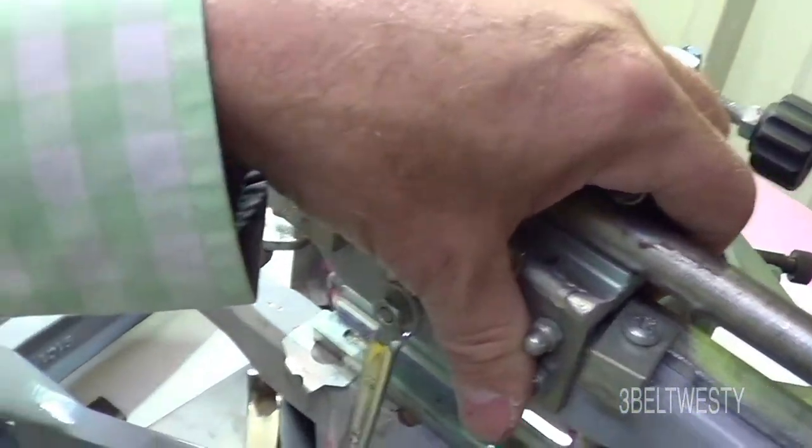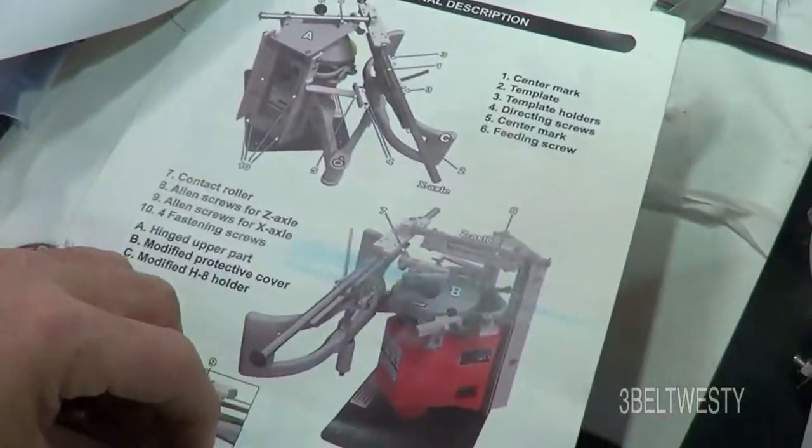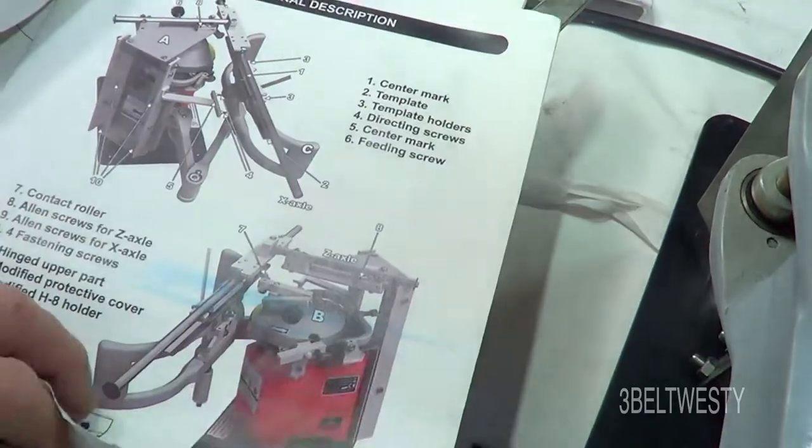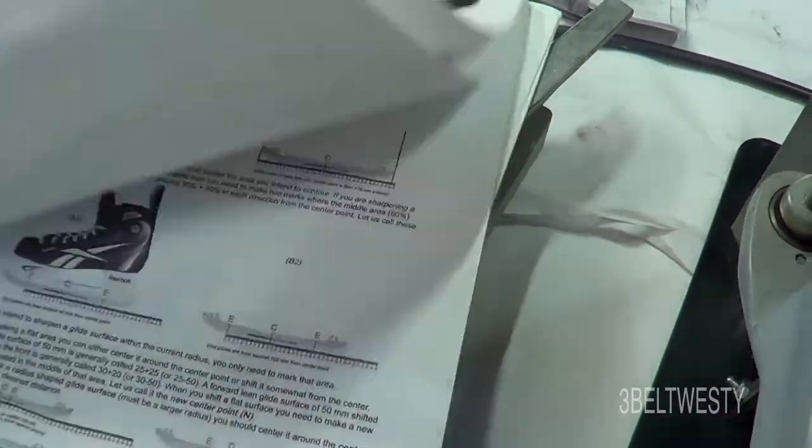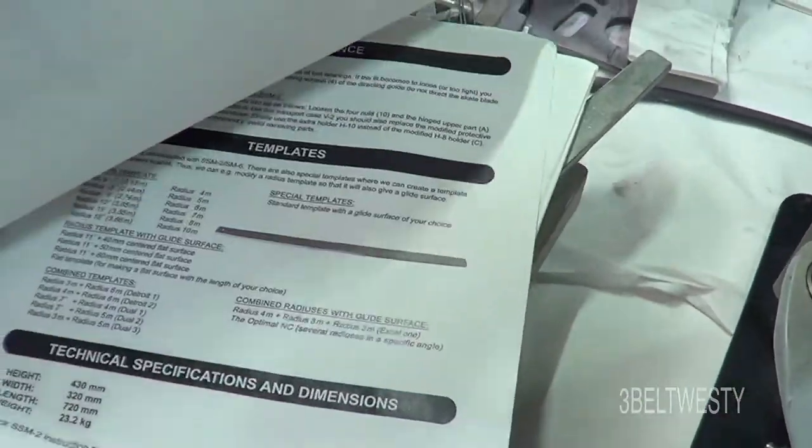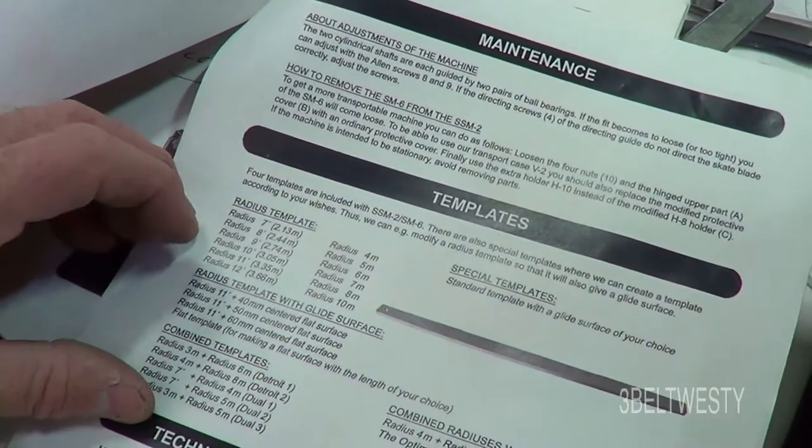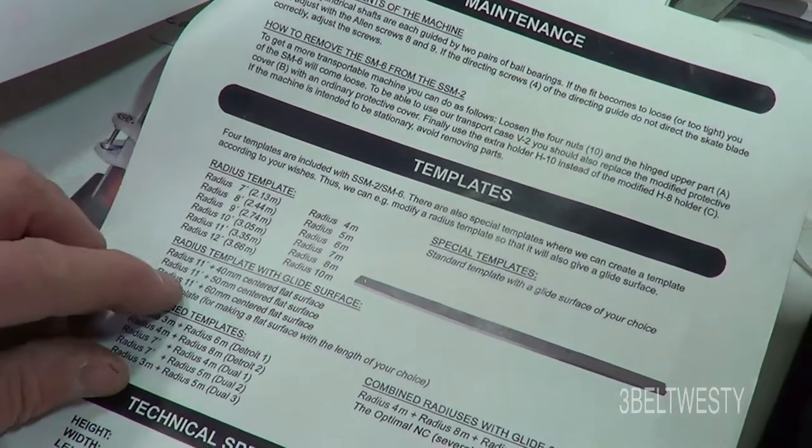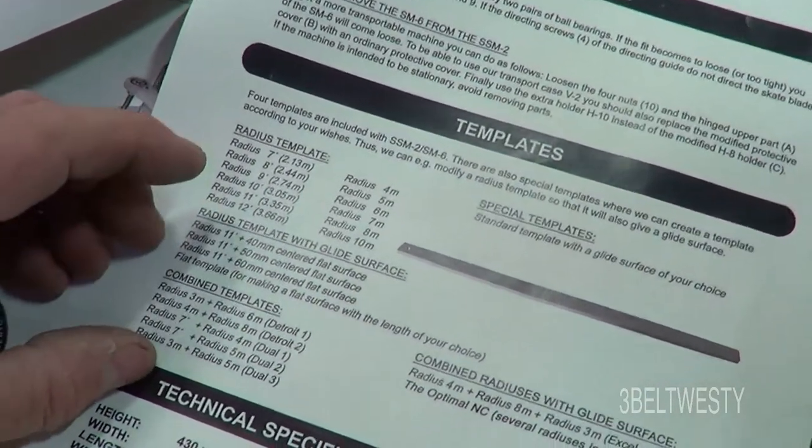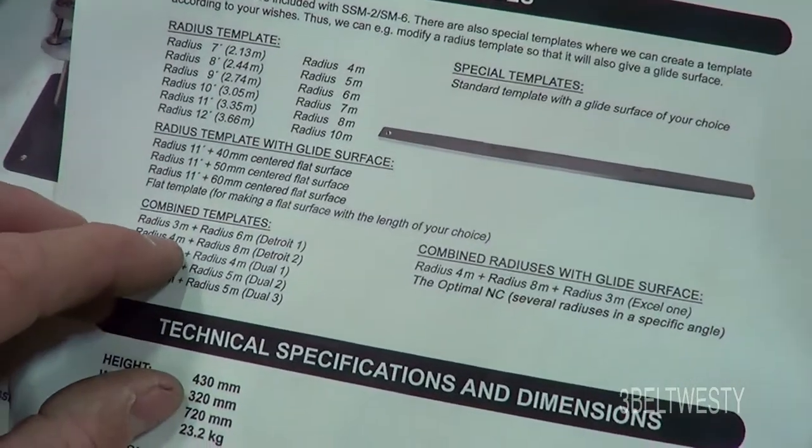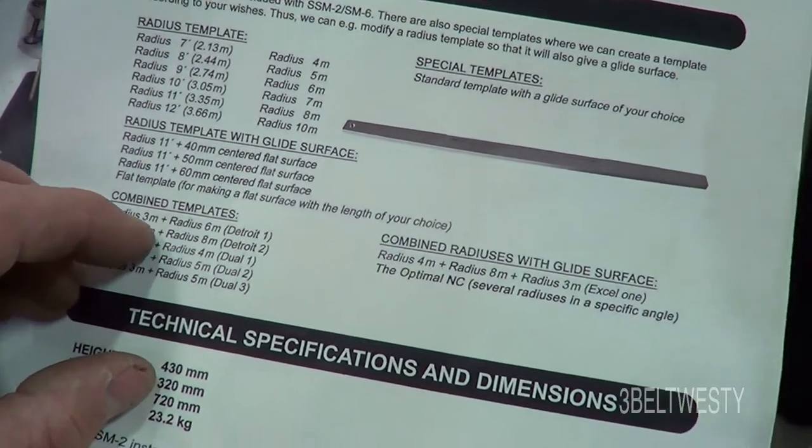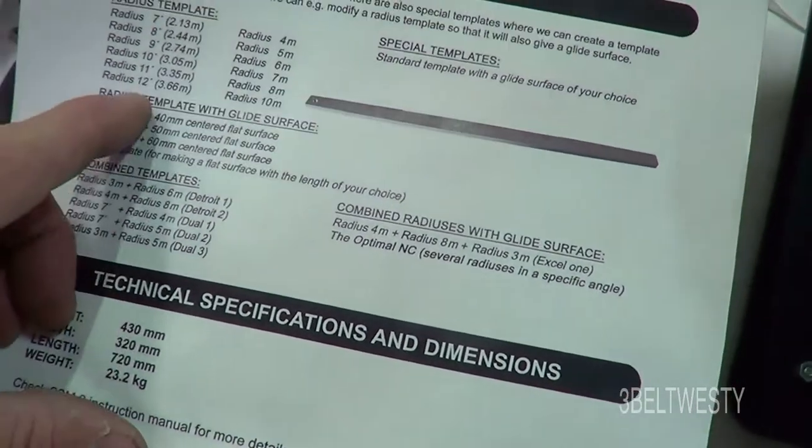And they had, I think on the brochure I had from 2006, they had one that had two radiuses of curvature on here. They had radiuses of 7 through 12, then they had one with radiuses with glide on it, and they had combined templates here.